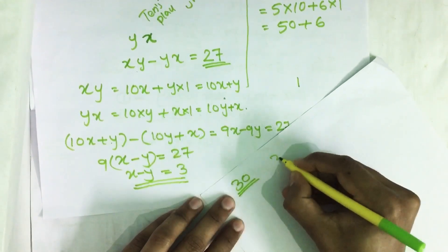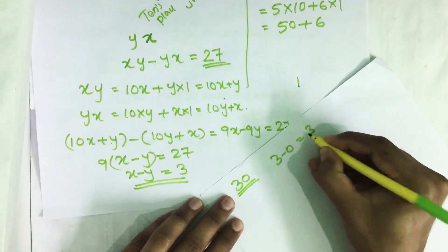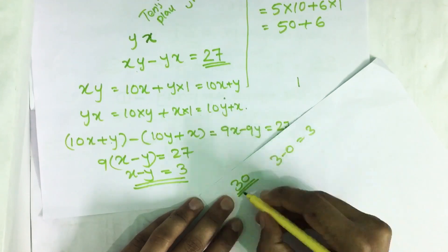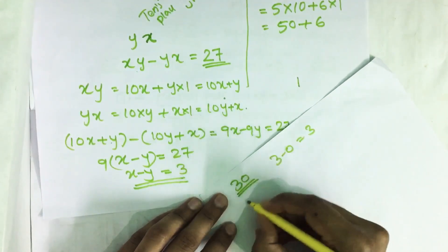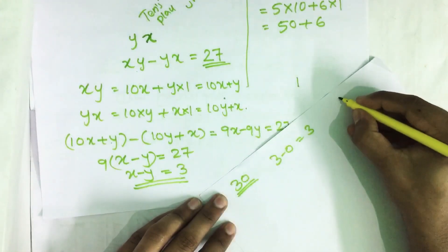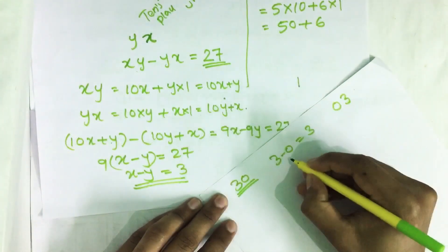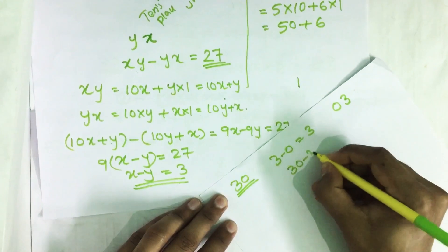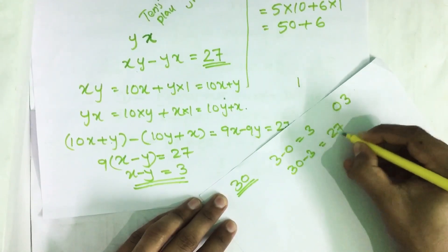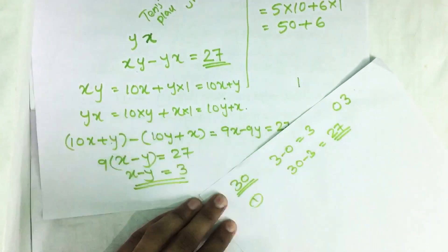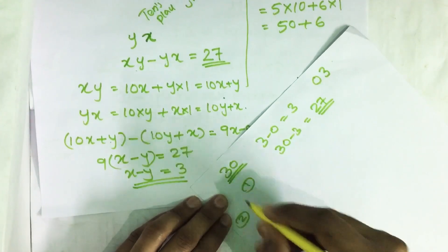Consider 30. 3 minus 0 we get 3. On reversing this we get 03. 30 minus 3 equals 27. This is the first number.